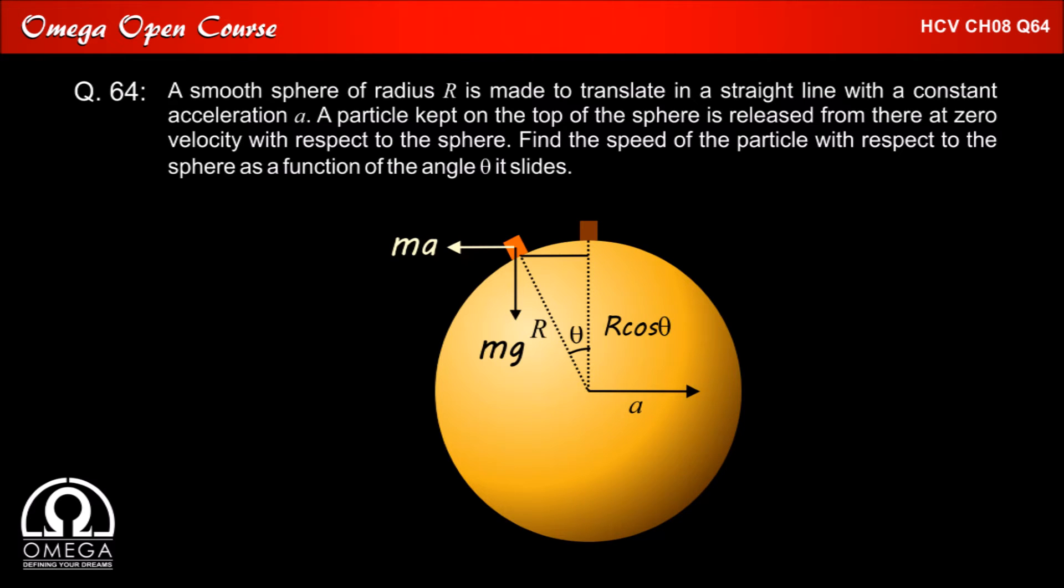When the block has moved by angle theta with respect to the sphere, its vertical height from the center of the sphere is R cos theta. Thus its displacement in vertical direction when it has moved from the topmost point to the theta position is R into 1 minus cos theta.